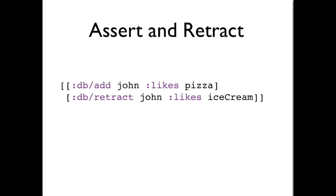The story of atomic update begins with the basics, assert and retract. All data in Datomic at bottom is represented as assertions or retractions. An assertion looks like a list led by dbadd. Here, John likes pizza.